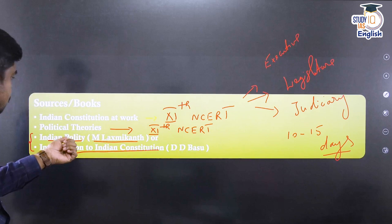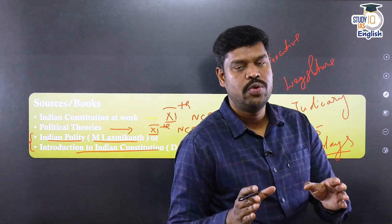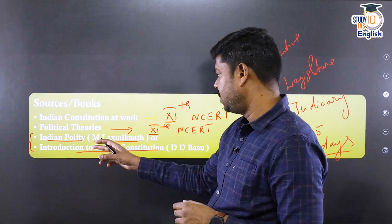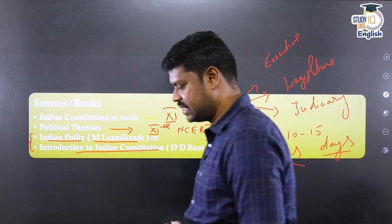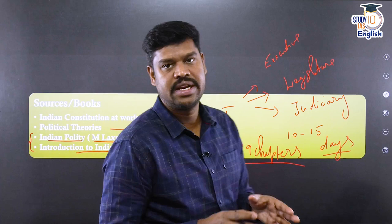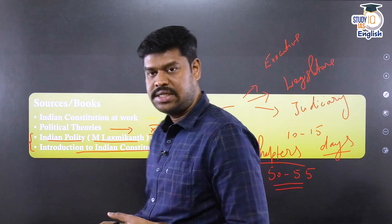So the sources are: the NCERT books — 'Indian Constitution at Work' and 'Political Theories' — and then M. Lakshmikanth. That would give you a good conventional idea of Indian polity. Coming to Lakshmikanth, students might ask — if you see the latest edition, there are 79 chapters in this book. Do I have to read all these chapters? You can go through them once, but not all 79 chapters are very important for the examination. Around 50 to 55 chapters may be very important.